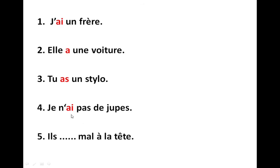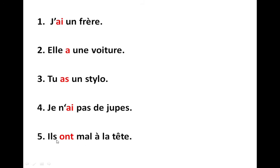With 'je' we write 'ai', so it becomes 'je n'ai pas de jupe' — I do not have a skirt. The last sentence: 'ils ont mal à la tête' — they have a headache. With 'ils' we write 'ont': 'ils ont mal à la tête'. We use the same expression with every body part: avoir + mal + à + the definite article + body part. You can also say 'ils ont mal à l'estomac' — they have stomach pain.